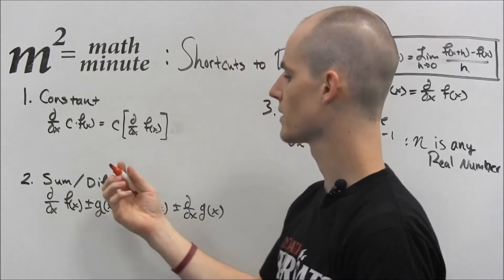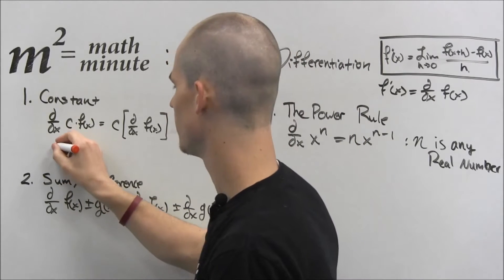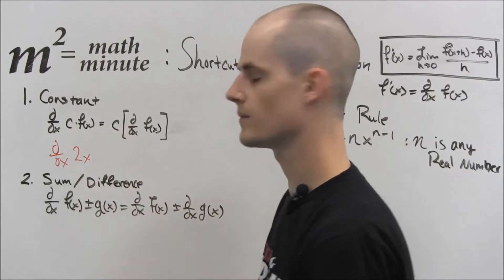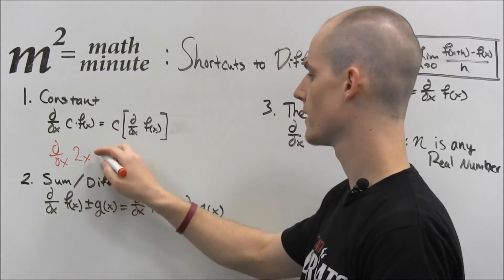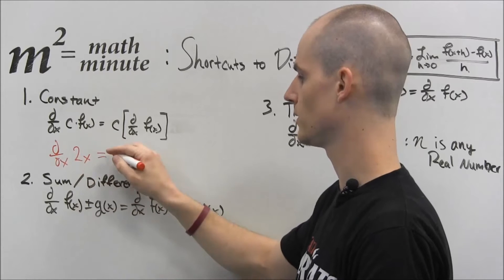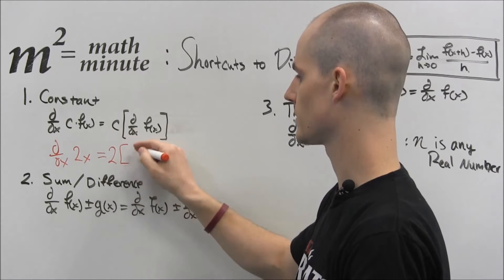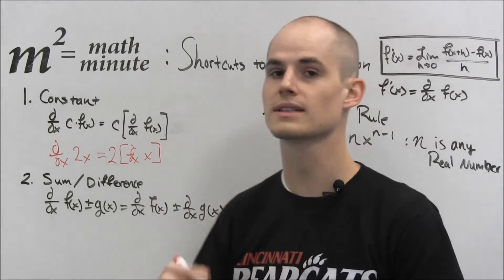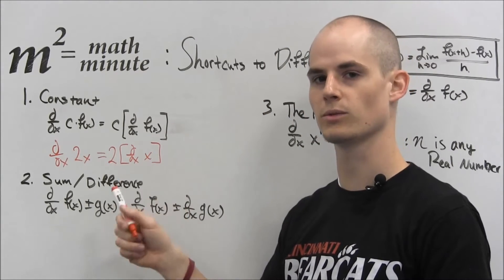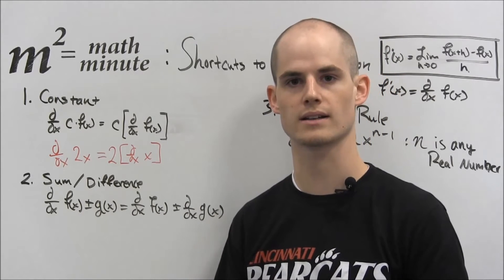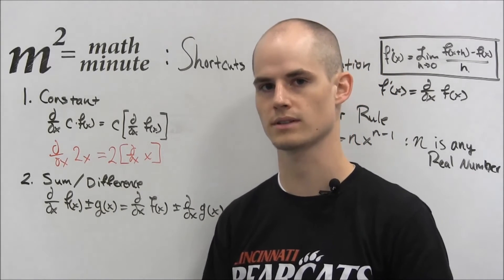So let's do this example. So if we have the derivative of 2x, we can split this up. So this says, from this rule, the constant is 2, so we have 2 times the derivative of x. And once again, very similar to limits, this is the goal that we really want to get to. This is what we want to end up, just the derivative of the variable x. It's really helpful, it's a really easy one to solve.